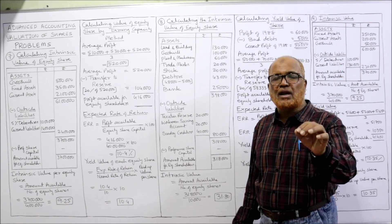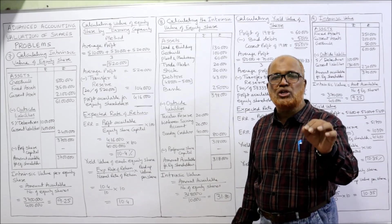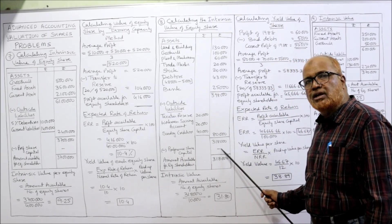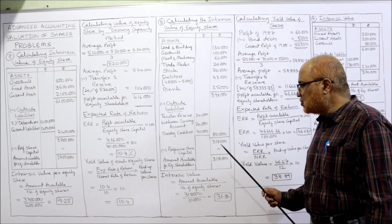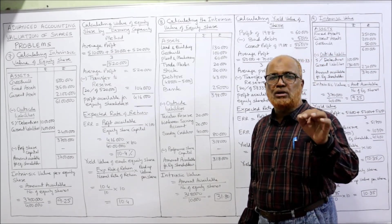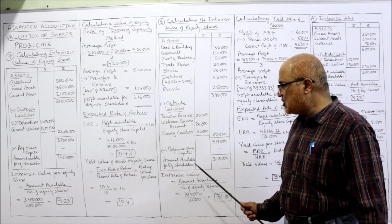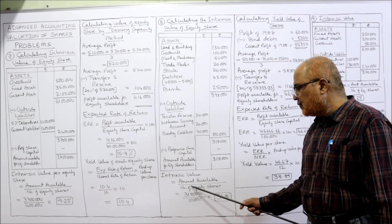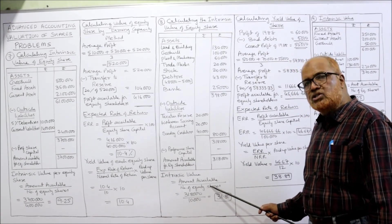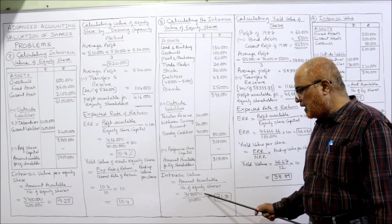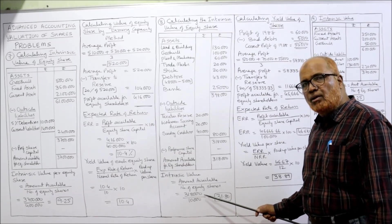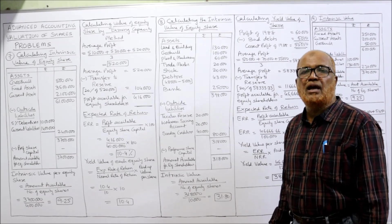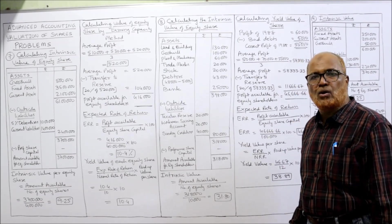From this we subtract preference share capital, but there is no preference share capital in this problem. So 3,18,000 is the amount available for equity shareholders. Intrinsic value = amount available ÷ number of equity shares = 3,18,000 ÷ 10,000 = 31.80. That is the intrinsic value.